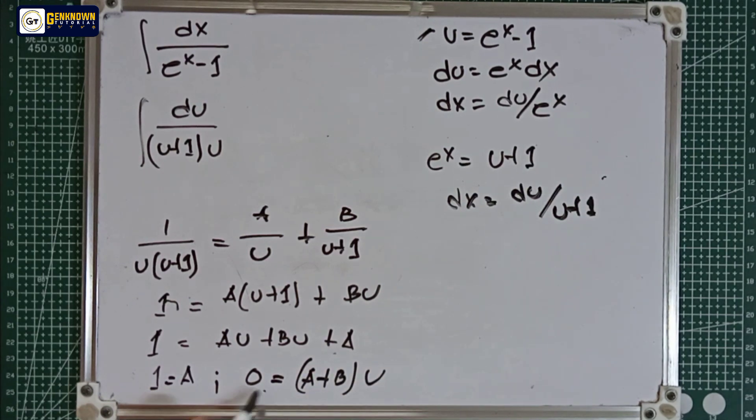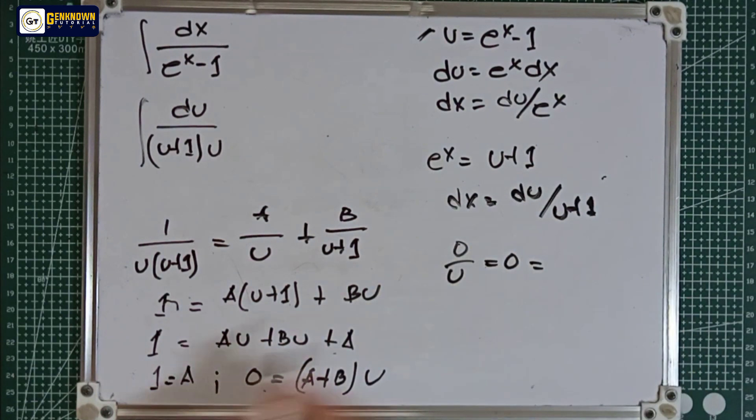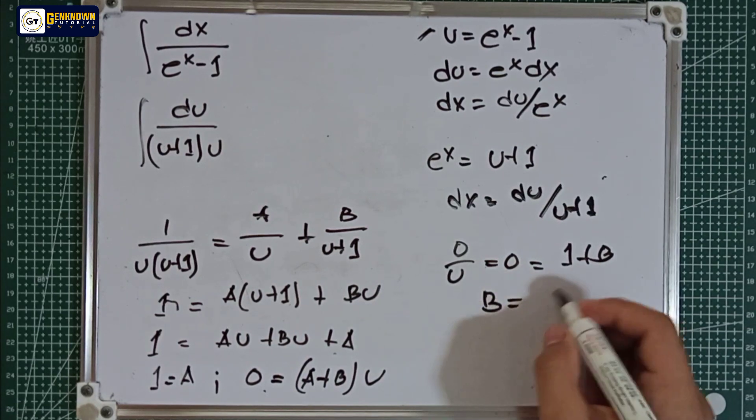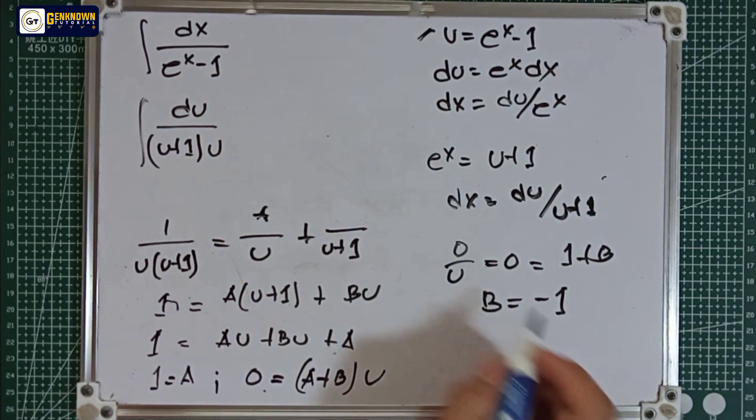Let's substitute the value of a now. So 0 over u is equal to 0 is equal to a is 1 plus b. So b is equal to negative 1. b is negative 1 and a is equal to 1.